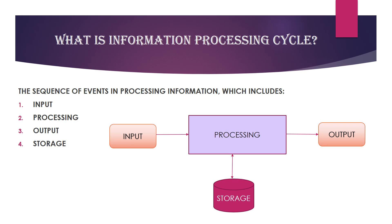Let us start with the first question: what is the information processing cycle? The information processing cycle is the sequence of events in processing information by the computer, which includes input, processing, output, and storage. You can see the flowchart of the information processing cycle here, where we can enter data as input, it gets processed by the computer and gives a result as output, and this output can also be stored in storage.